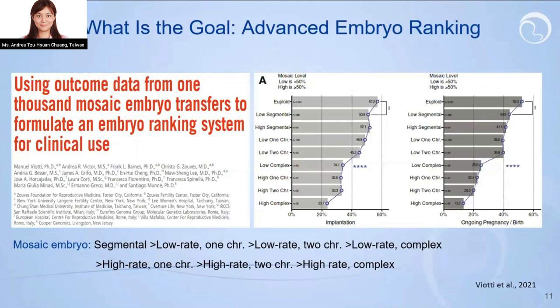Recently, advanced embryo ranking has become more popular among PGTA users, meaning mosaic embryos must be considered. Bioldi et al. published a wonderful paper last year using a huge dataset to correlate reproductive outcomes and chromosome status in mosaic embryos. They found that reproductive outcome is associated with the affected chromosome length, the aneuploidy percentage, and the number of affected chromosomes. So if you want to build a delicate ranking system, mosaicism must be incorporated.